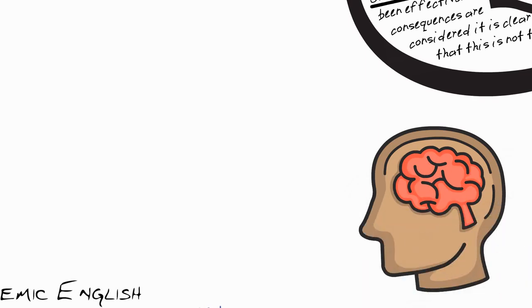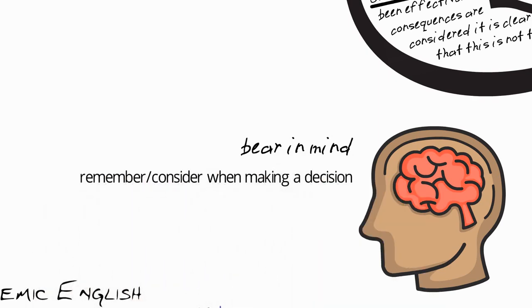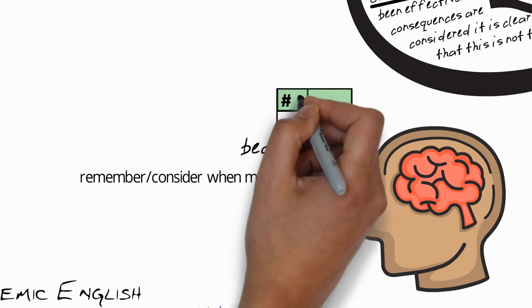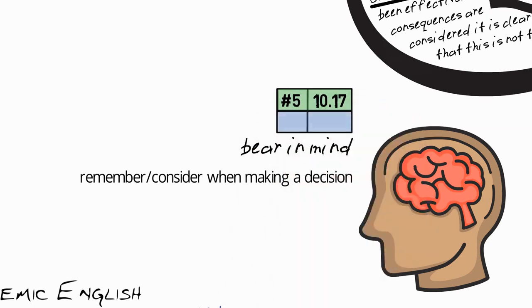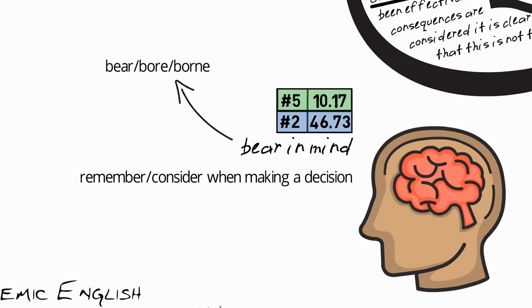For example, on the face of it these measures seem to have been effective. However, if the long-term consequences are considered, it is clear that this is not the case. So in this sentence, the first idea is contrasted with the second idea which shows the real situation. The final body idiom is bear in mind. Mind is not quite part of the body but it's close enough, so I'll consider it here.